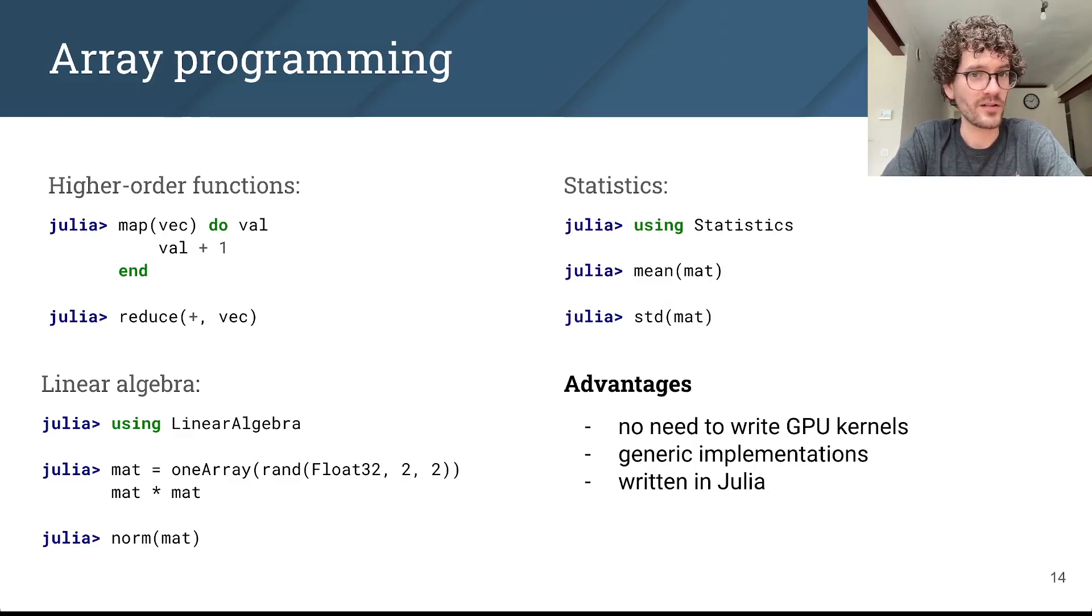And even better, these operations can be written generically, meaning you only use the oneArray type at the start of your computations. The application itself will be written using generic array operations. The benefit of that is that you can port code that's been written for another GPU backend or even for the CPU by simply changing the input array type. And at the same time, all of these operations are implemented in Julia, which means that they are easy to improve or develop without C++ experience.